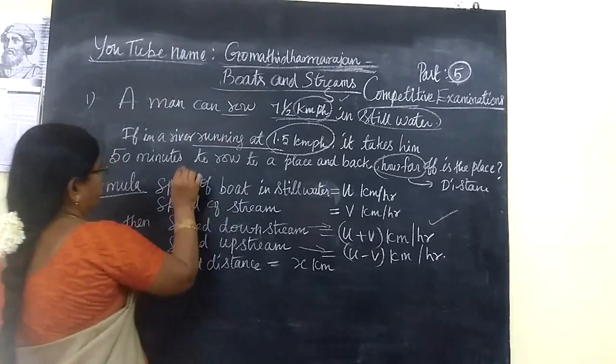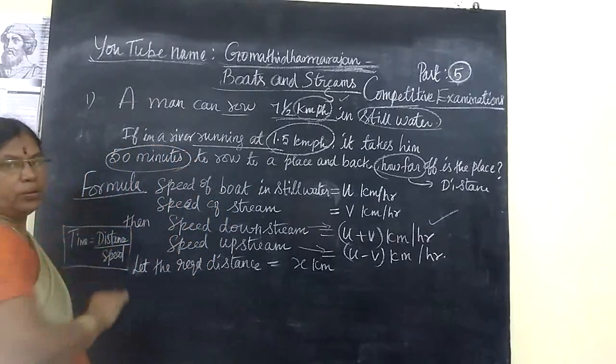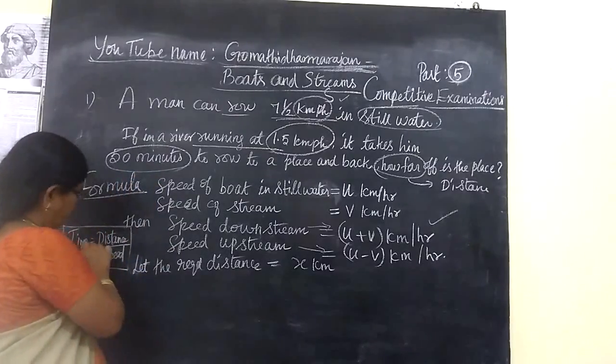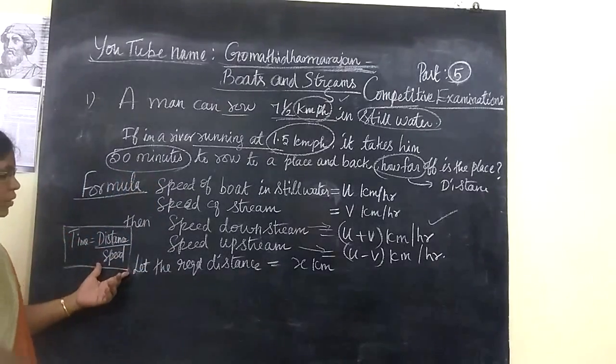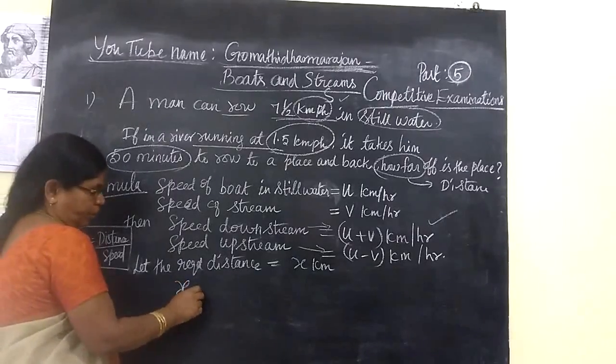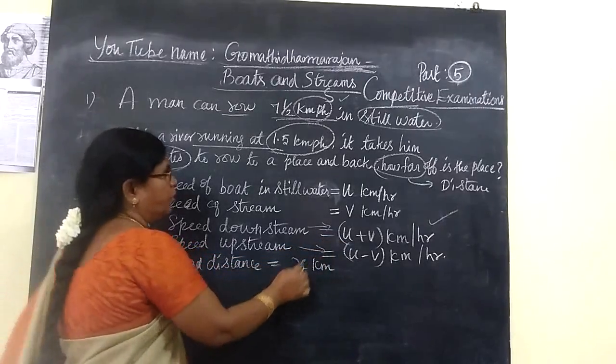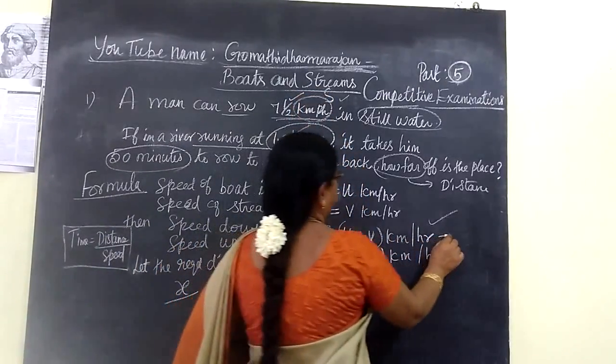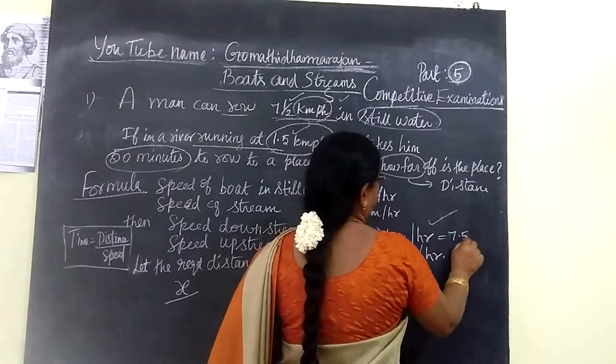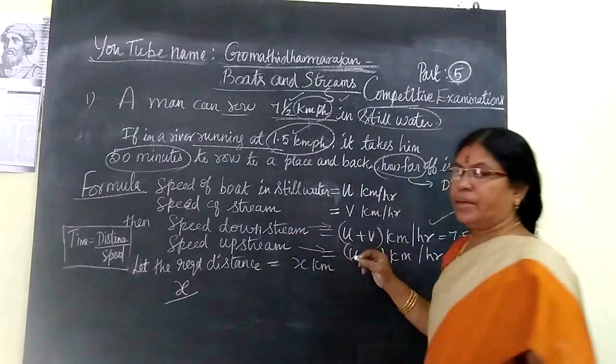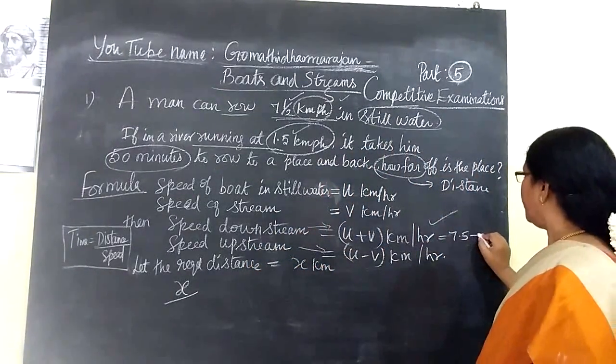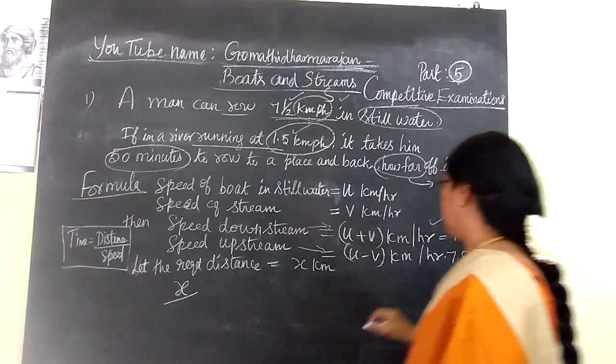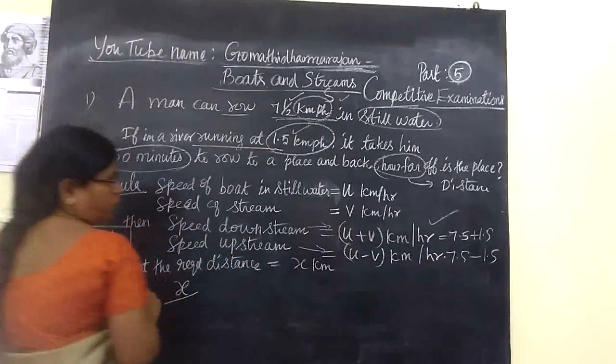Total time given is 50 minutes. Time equals distance by speed. Distance is X kilometer by speed U plus V. So 7.5 plus 1.5, then 7.5 minus 1.5.